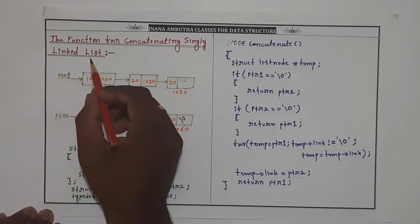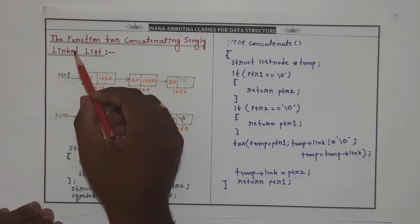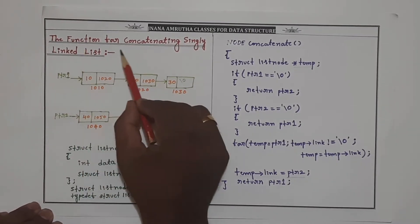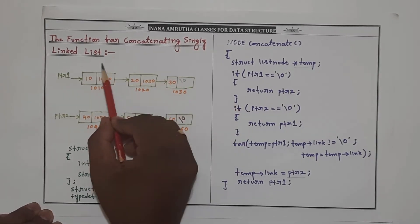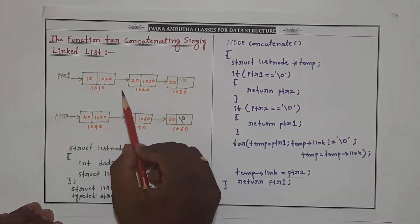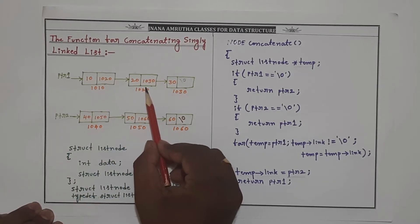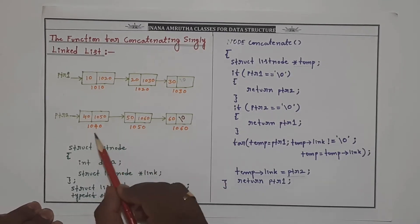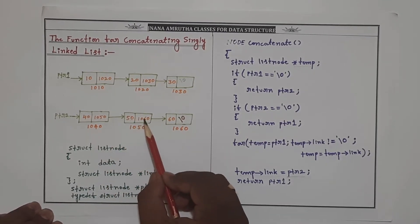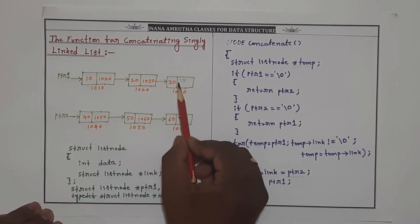Hello friends, welcome to Gnana Mruta channel. In this video we are discussing the function for concatenating two singly linked lists. Observe the figure below: PTR1 is pointing to list 1 and PTR2 is pointing to list 2. Our objective is to append or concatenate list 2 to list 1.